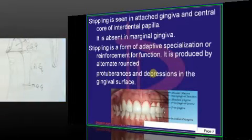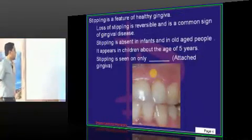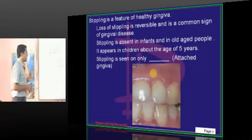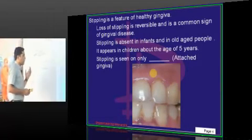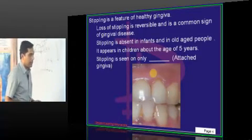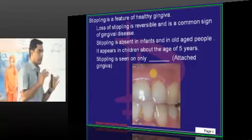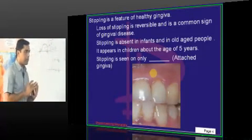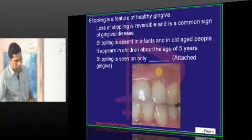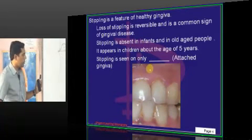Stippling is a feature of healthy gingiva. Loss of stippling is reversible and is a common early sign of gingival disease. If asked which area shows stippling — select attached gingiva and the middle portion of the interdental papilla. Whenever inflammation occurs, stippling is lost.